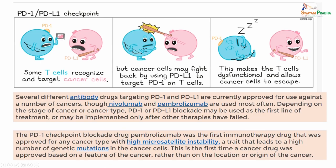The PD-1 checkpoint blockade drug is pembrolizumab. Pembrolizumab is for the PD-1 checkpoint and this was the first immunotherapy drug that was approved for any cancer type with high microsatellite instability. This microsatellite instability is a trait that leads to a number of genetic mutations in cancer cells. If you have a tumor which has a very high amount of MSI, then patients with these kinds of tumors are targets for pembrolizumab treatment. This was the first time a cancer drug was approved based on a feature of a cancer rather than the location of its origin.